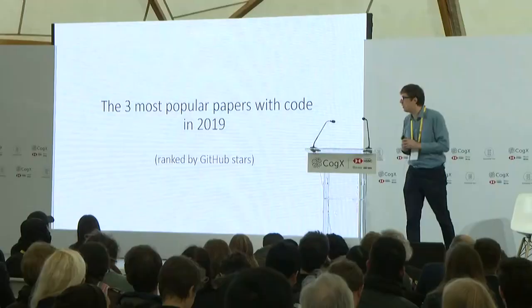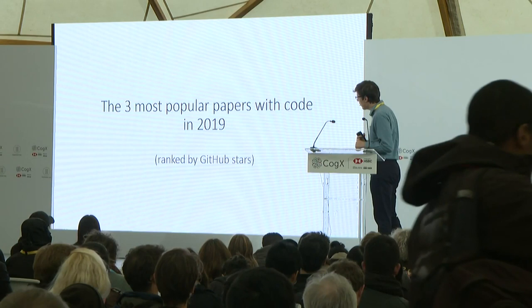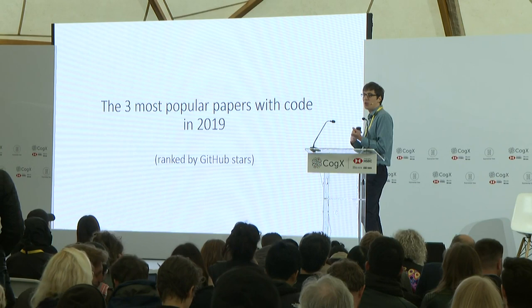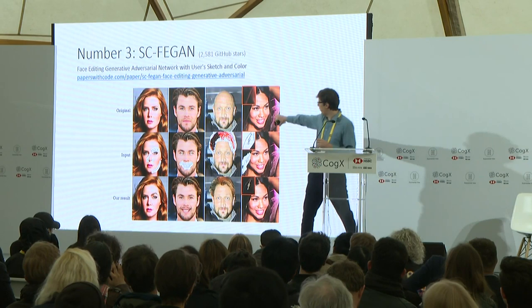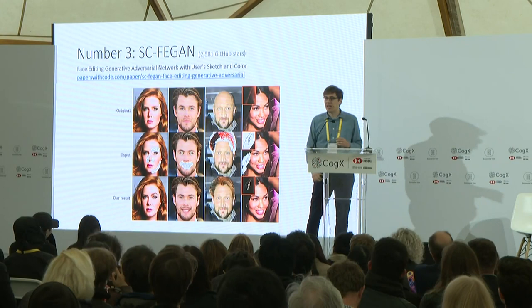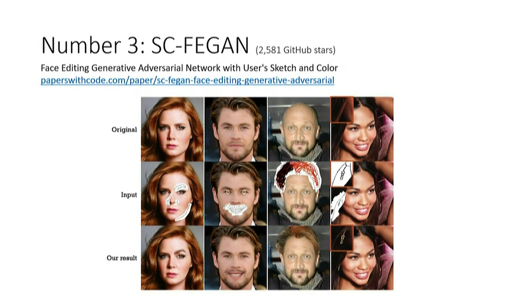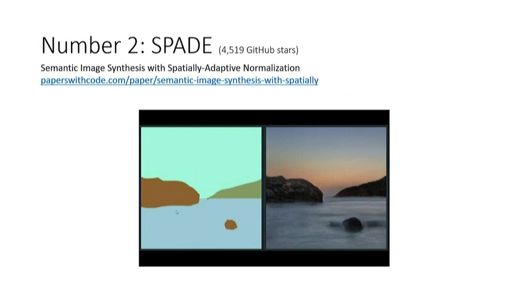So now in the second half, I wanted to tell you about some of the insights from the data that we got. You might want to know what are the three most popular papers with code this year so far. Number three: GANs. Here is a work from a group in Korea — you can take a bald person, draw some colorful hair, and then this in-paints the actual hair. Two and a half thousand stars on GitHub. Number two: also GANs. What we're doing here is sketch-to-image synthesis.